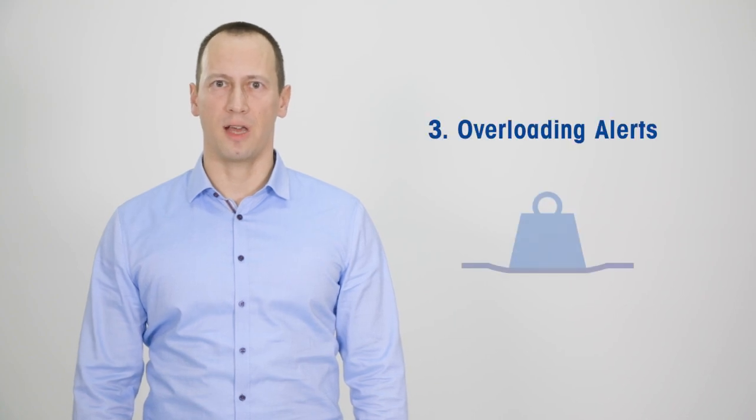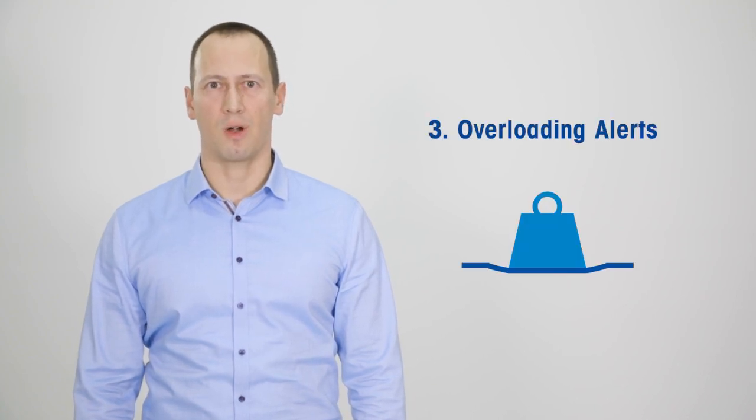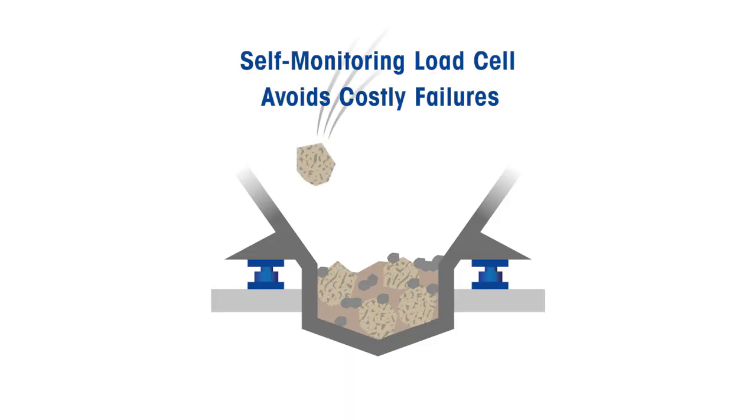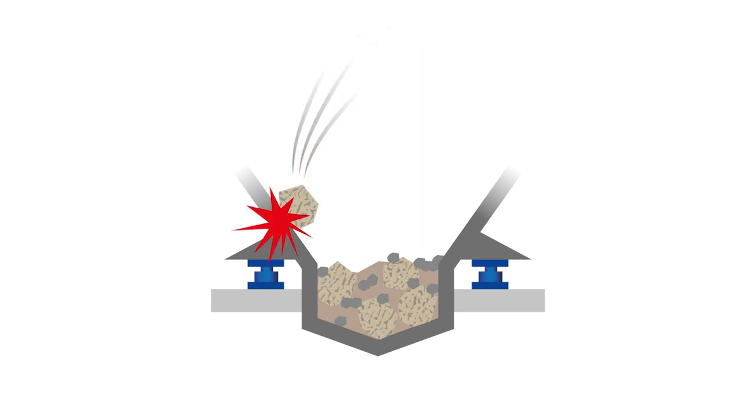Each PowerCell load cell also self-monitors to tell you when the load is too heavy or has a run-in with heavy equipment. This self-monitoring tells you about potential reduction in accuracy and in the worst case damage of the load cell or components within the scale. PowerCell load cells constantly monitor themselves for internal defects, such as broken wires, leakage and insufficient voltage supply. If anything is amiss, you will receive an alarm to prevent costly production errors.